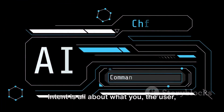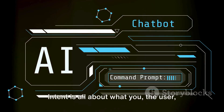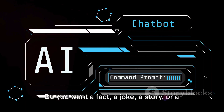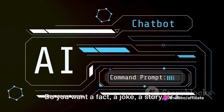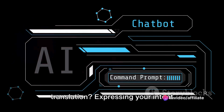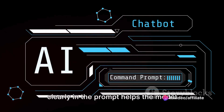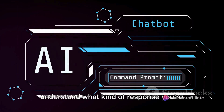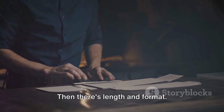Next is intent. Intent is all about what you, the user, want from the model. Do you want a fact, a joke, a story, or a translation? Expressing your intent clearly in the prompt helps the model understand what kind of response you're looking for.